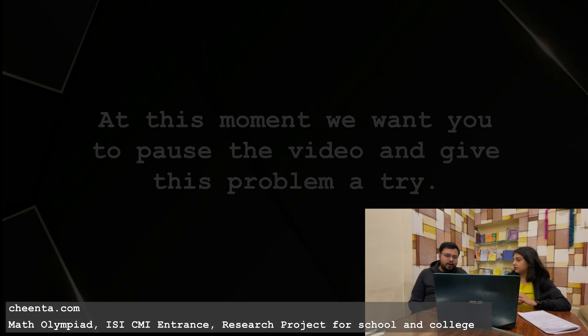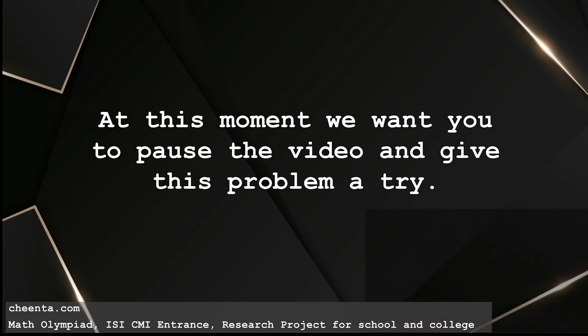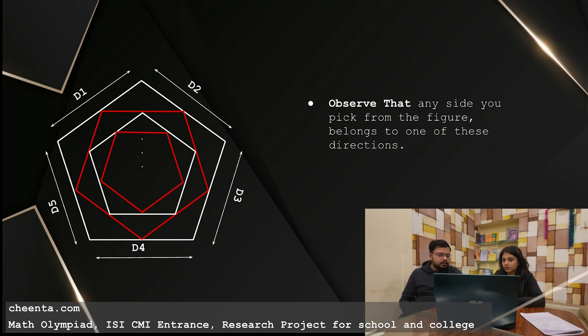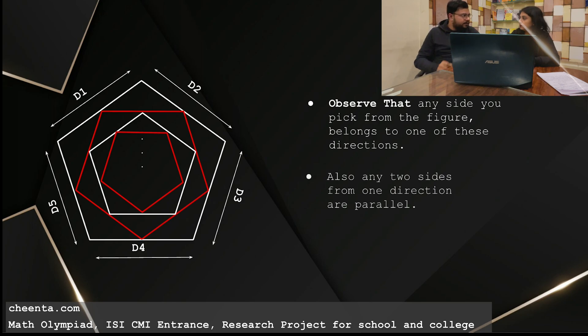I want you guys at this point to pause the video and give this problem a try. So look at the diagram again. We'll notice that the parallel sides we were talking about, they are actually distributed in some different directions. There are five directions in fact. And all of the parallel sides belongs to one of these directions. If you pick any one side from the figure, that will definitely belong to one of these directions. So this is a key concept for this problem, key observation. And if you pick any two sides from one of the directions, you will find that those two sides are parallel. So we wish to show that there are two sides which belong to the same direction and they have same colored end points.